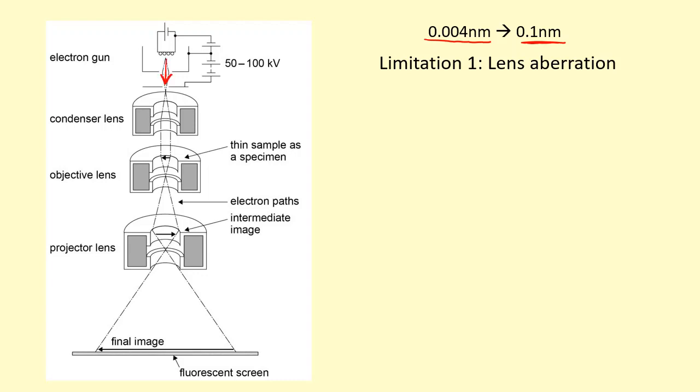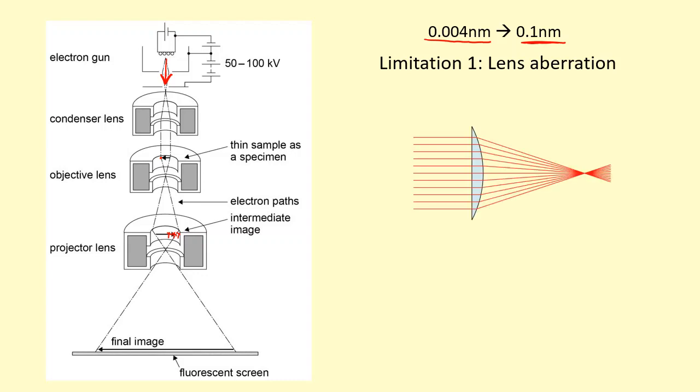This is because when the electrons leave the electron gun, they have different amounts of velocity - some are traveling faster than others. This means that electrons leaving from the same point may not necessarily meet at the same point after they've gone through the lens, because the magnetic field will deflect them different amounts based on their speed.